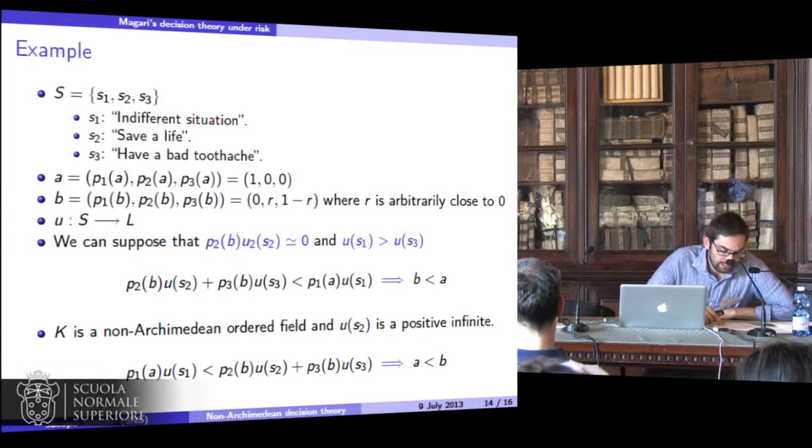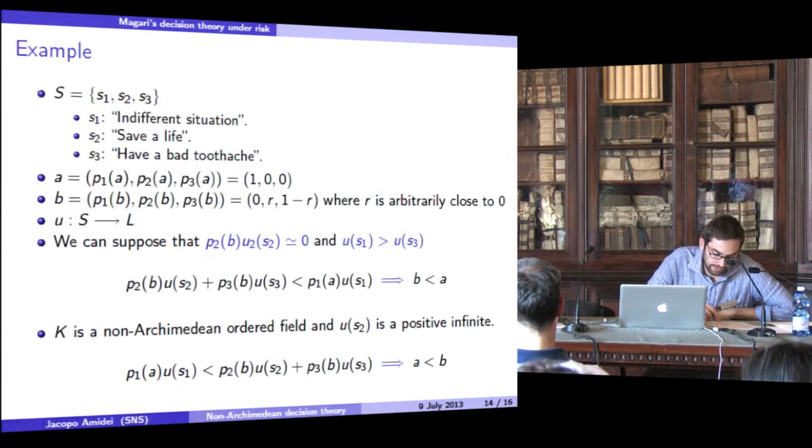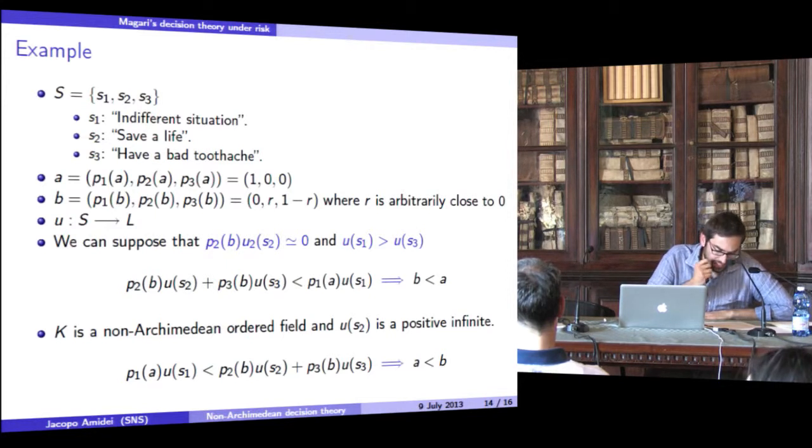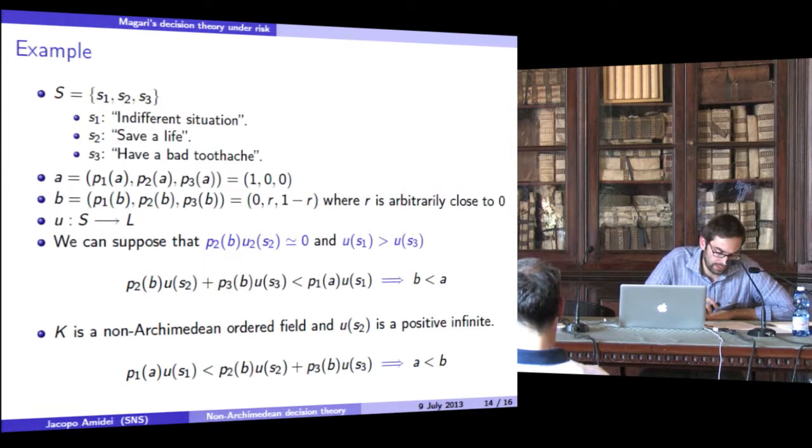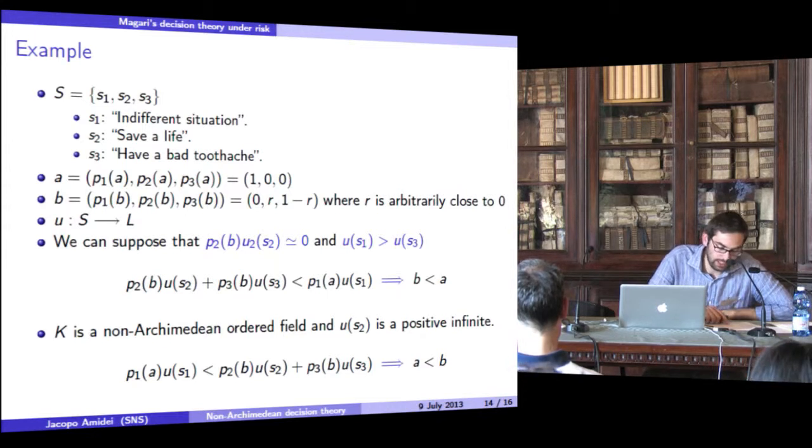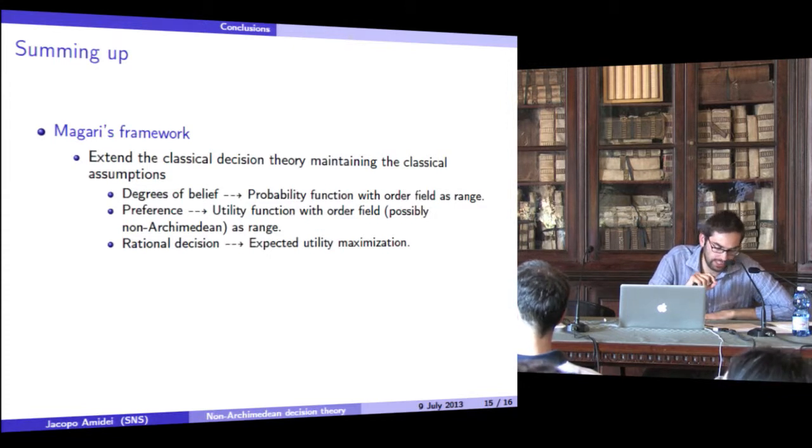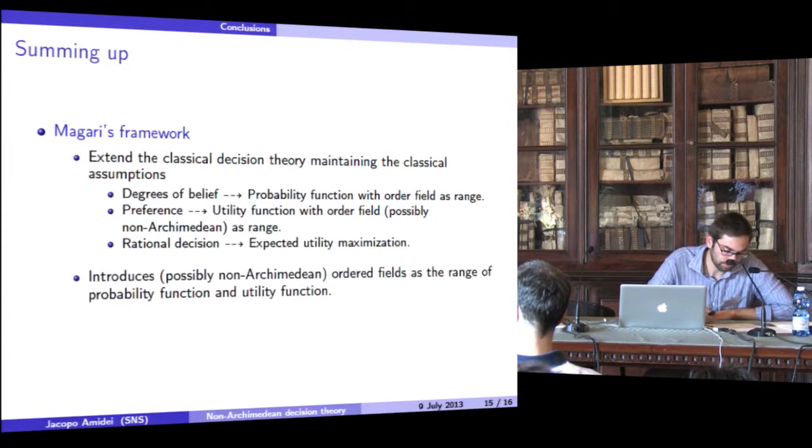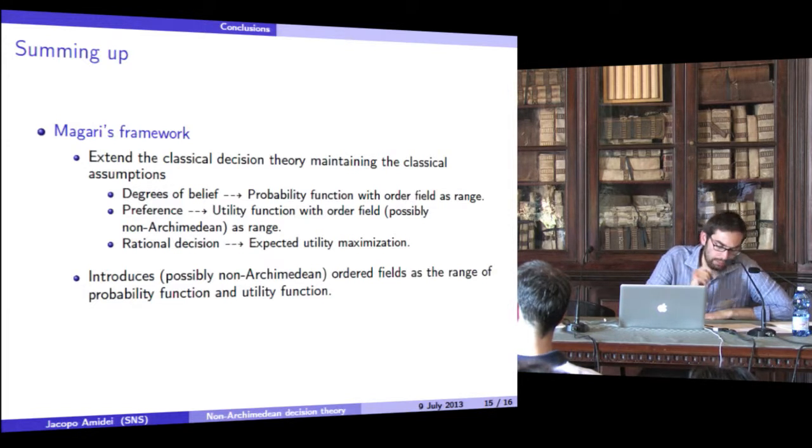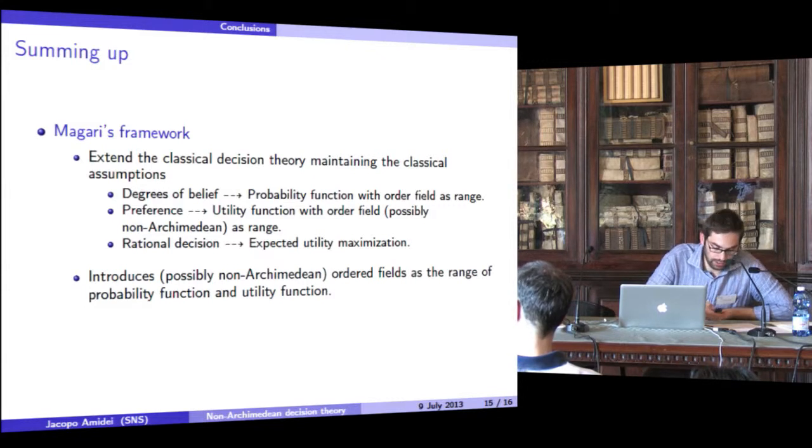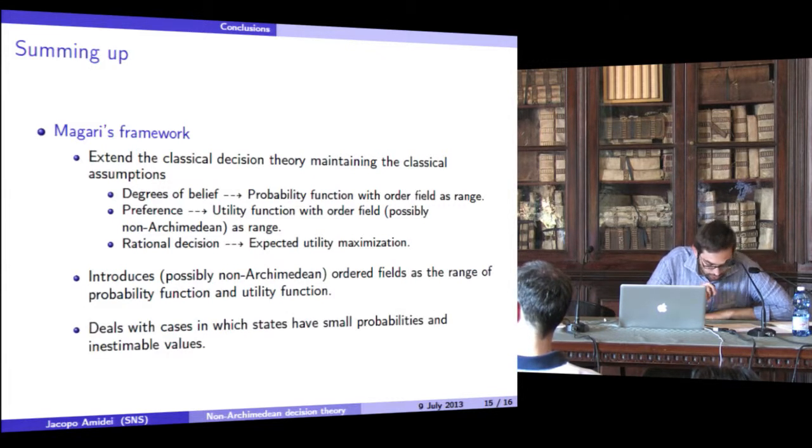In conclusion, the starting point of Roberto Magari is the observation that very often when we have to deal with small probability, the values at stake are inestimable. Since the classical decision theory disregards the potentially disastrous consequences of small probability, Magari developed a decision theory whose main characteristics are the following: extend the classical decision theory, maintain the classical assumptions, introduce possibly non-Archimedean ordered fields as the range of probability functions and utility functions, and deal with cases in which a state has small probability and inestimable value.